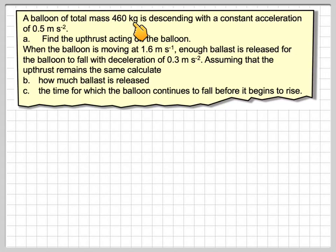A balloon of total mass 460 kilograms is descending with a constant acceleration of 0.5 meters per second squared. Find the upthrust acting on the balloon.